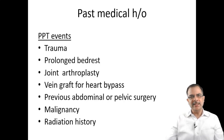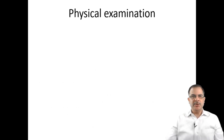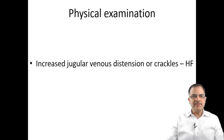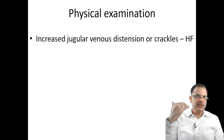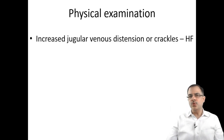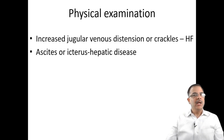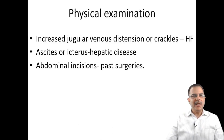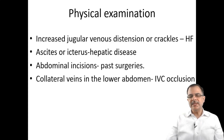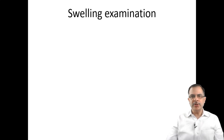Physical examination: on general examination, raised JVP points toward heart failure. Ascites or icterus suggests hepatic disease. Abdominal incisions give a clue about past surgeries as a cause of swelling. Collateral veins in the lower abdomen point toward inferior vena cava obstruction.